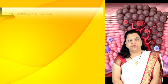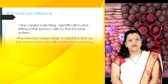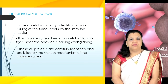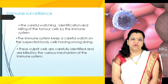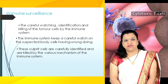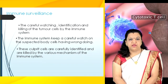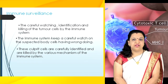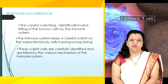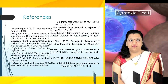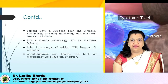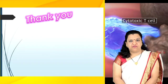We should also talk about immune surveillance. The careful watching, identification, and killing of tumor cells by the immune system is called immune surveillance. The immune system keeps a careful watch on suspected body cells having wrongdoings. These culprit cells are carefully identified and killed by the various mechanisms of the immune system.